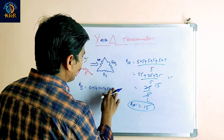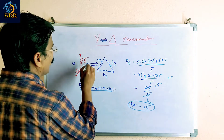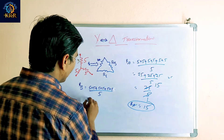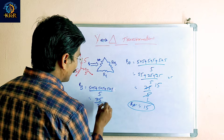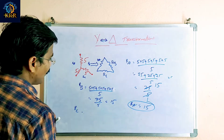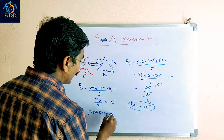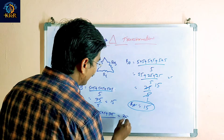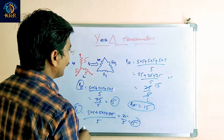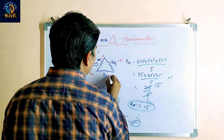This is Rb. The quite opposite resistance is 5. Same: 75 by 5, you will get 15. Same for Rc also — 5 into 5 plus 5 into 5, divided by 5, this is also 75 by 5, you will get 15. Ra, Rb, Rc values you can calculate: this is 15, this is 15, this is 15.